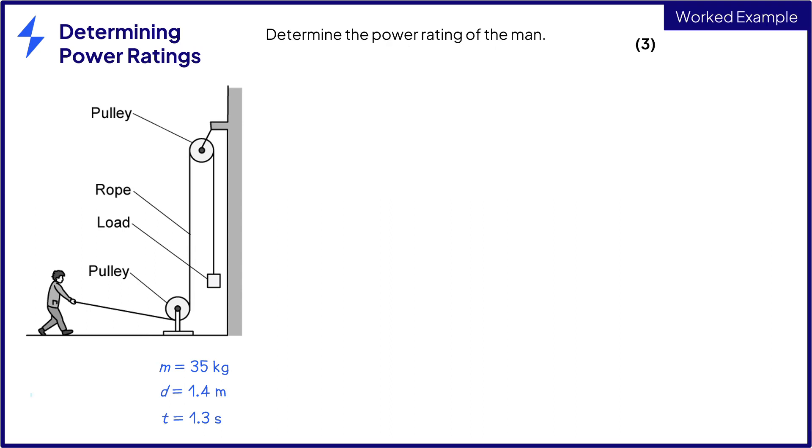We're asked to calculate power and we know that power is equal to energy transferred per unit time and we're given time so that's a really good starting point. We know that energy transferred is equal to work done so how can we use the values we've been given to get to work done?